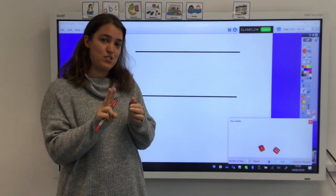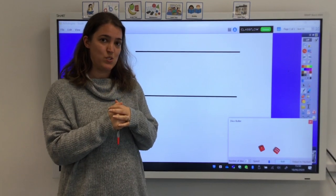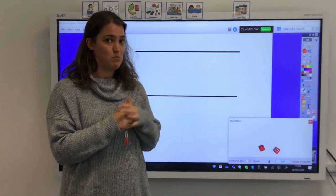The other way is to still use two dice, but to look at rounding decimals to the nearest whole number. And that's what I'm going to model now for you.